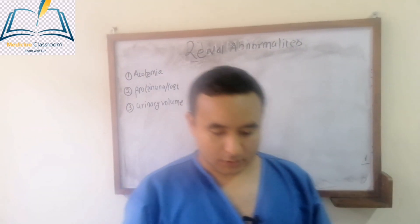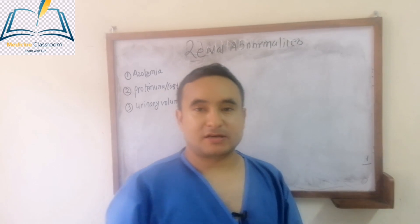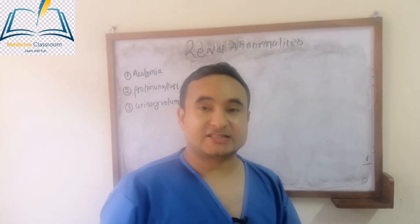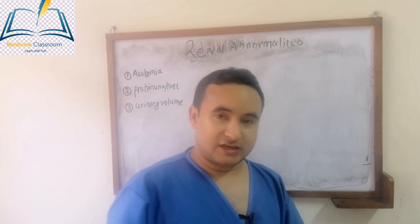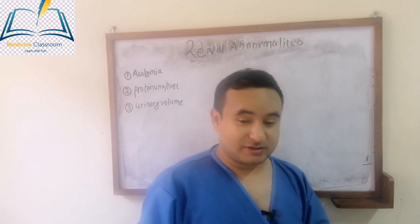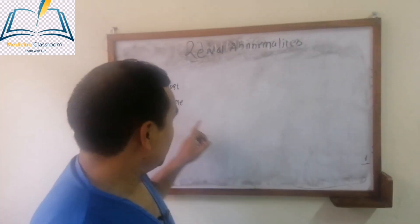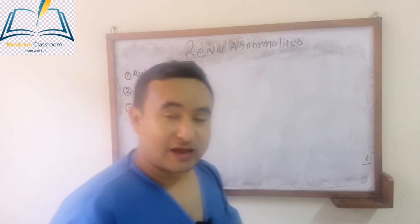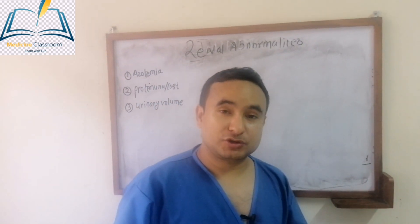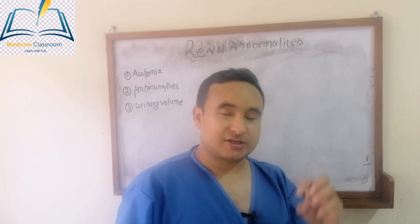Good morning, students. Today we learn about renal abnormalities. In yesterday's lecture we discussed azotemia and learned about calculating the estimated GFR — when we see elevation in plasma creatinine, we can calculate the eGFR and estimate the glomerular filtration rate. Today I'm going to tell you about proteinuria: how we estimate it and how we approach a patient with proteinuria.